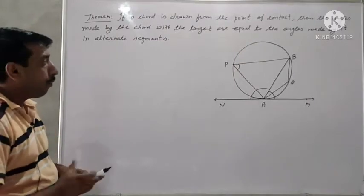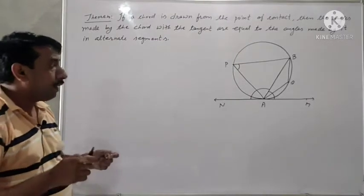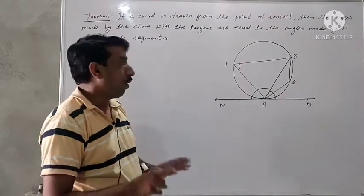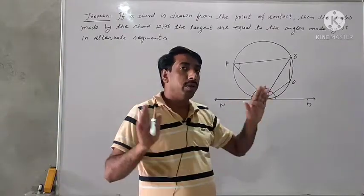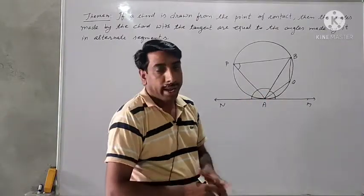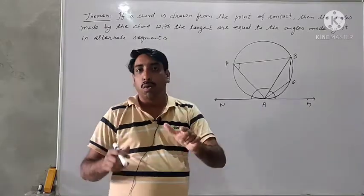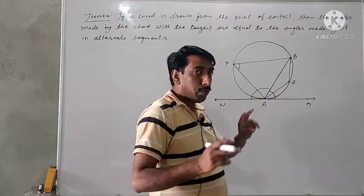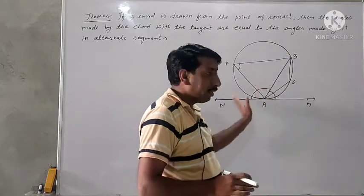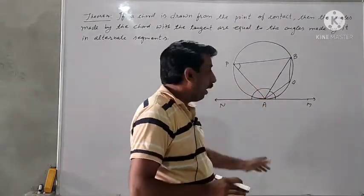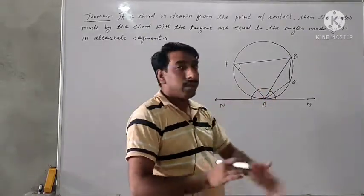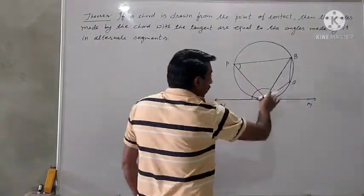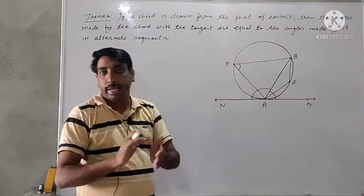I am repeating it. If we draw a chord from the point of contact, the chord will make two angles with the tangent — in this direction and in this direction. And these angles are to be put equal to the angles made by the same chord in the alternate segments.